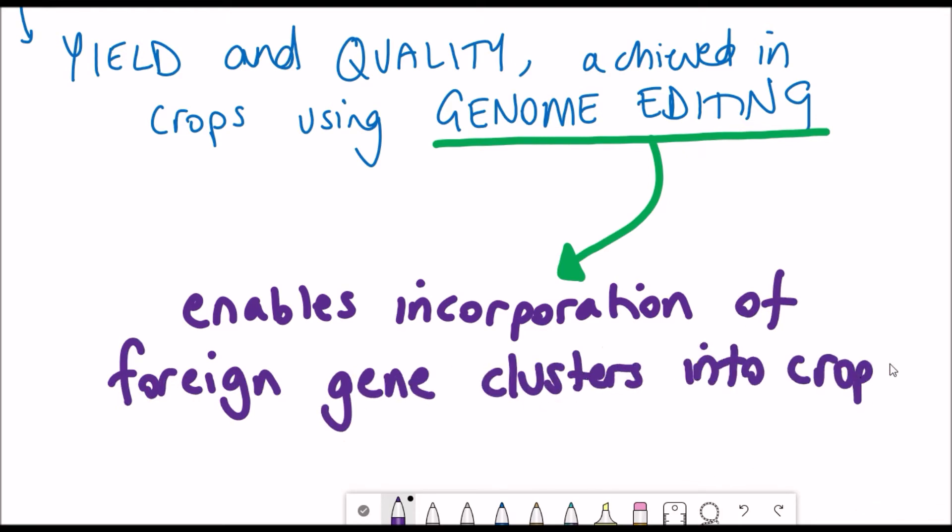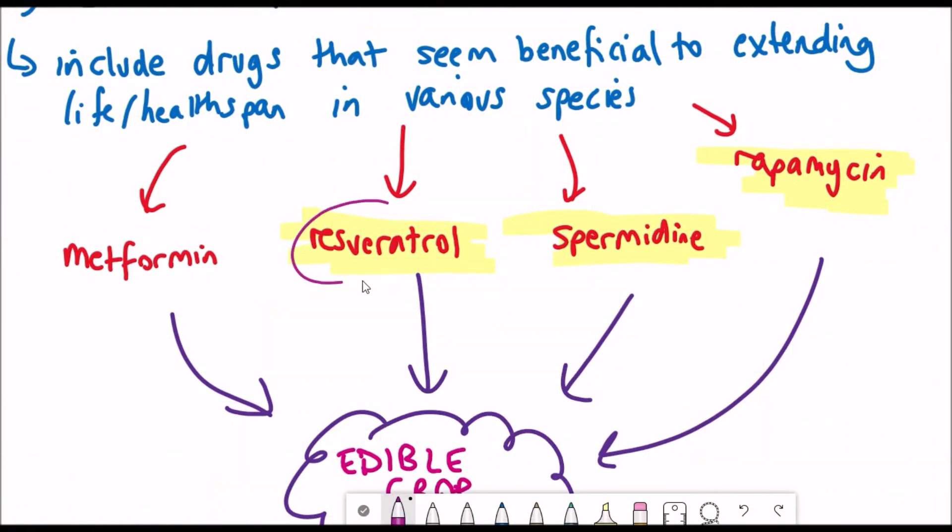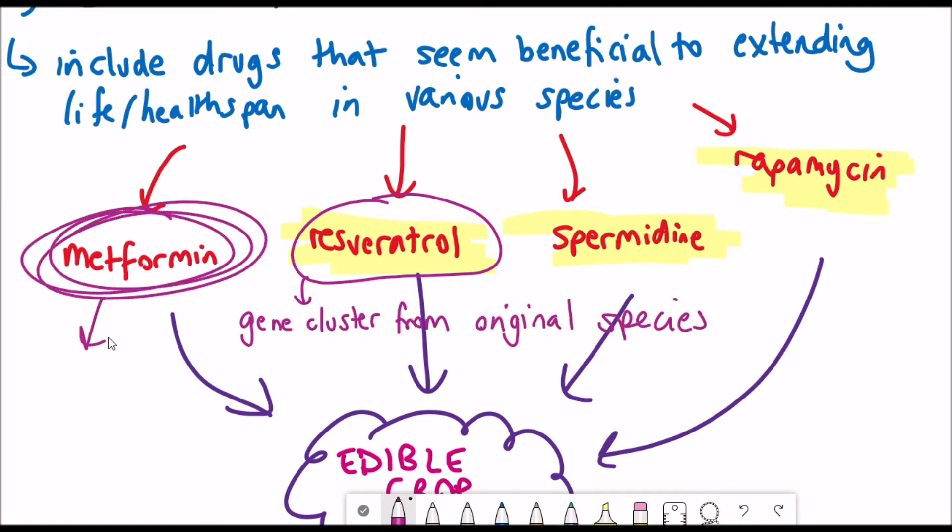for the synthesis of desired drugs. Gene clusters for the synthesis of natural drugs like resveratrol can be sought from the original species from which they were discovered, whilst metformin would require ingenuity to modify the synthesis pathways of related natural chemicals.